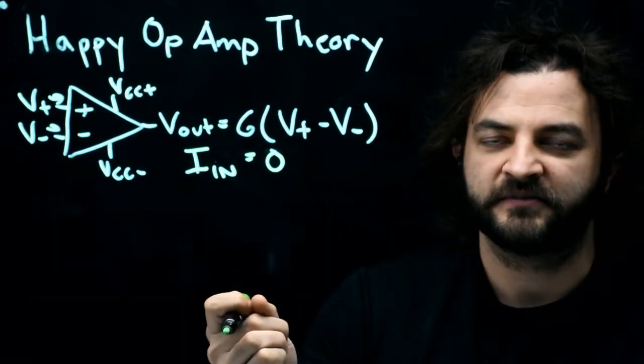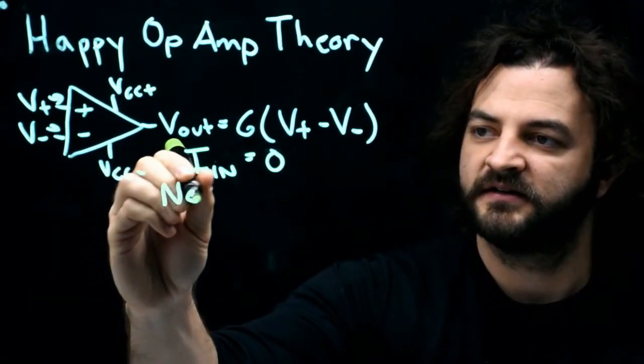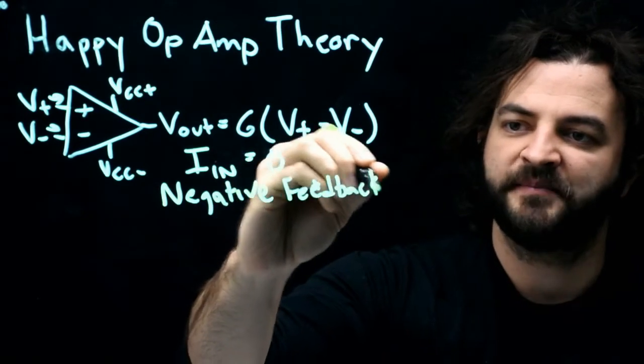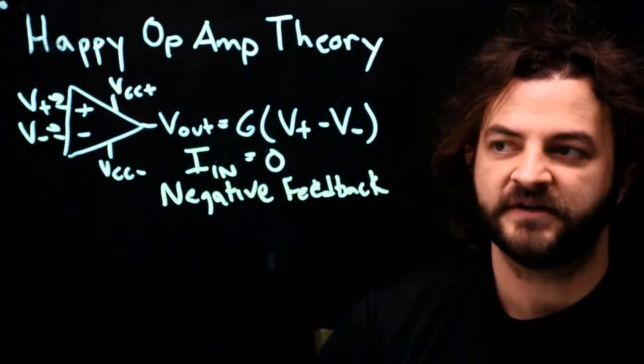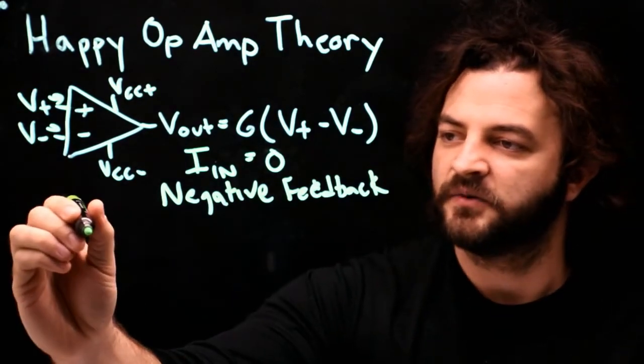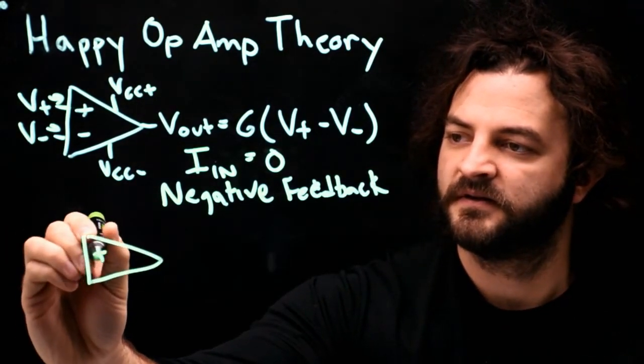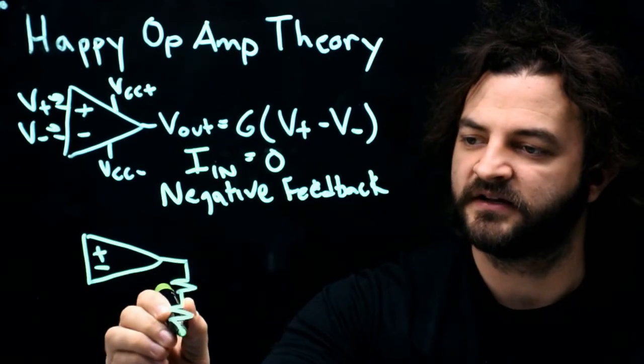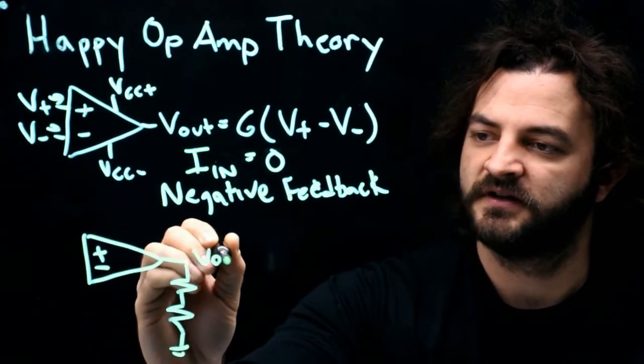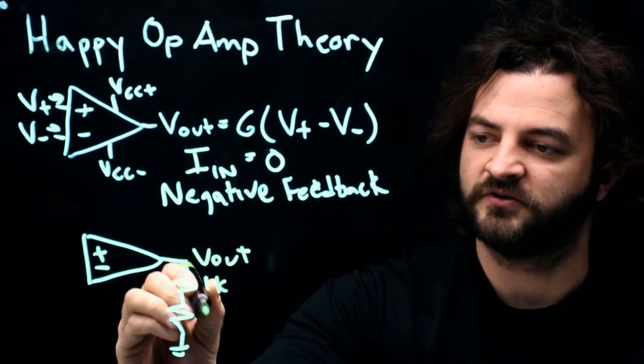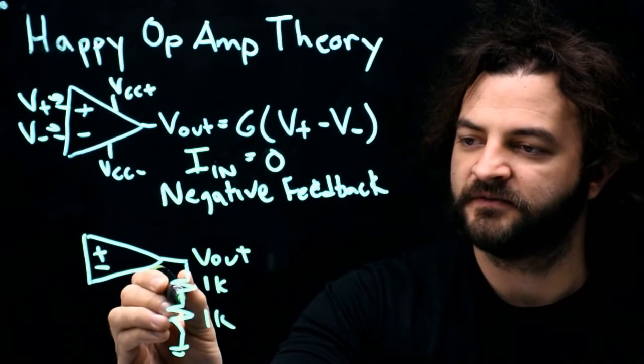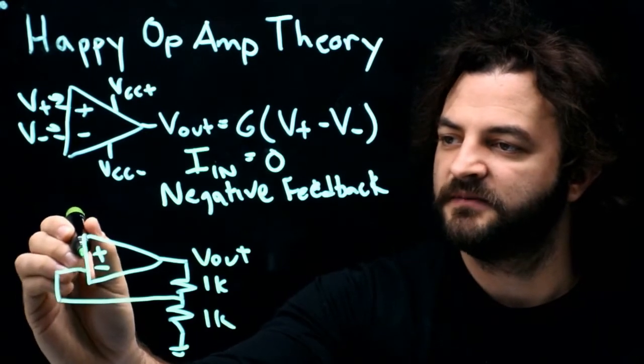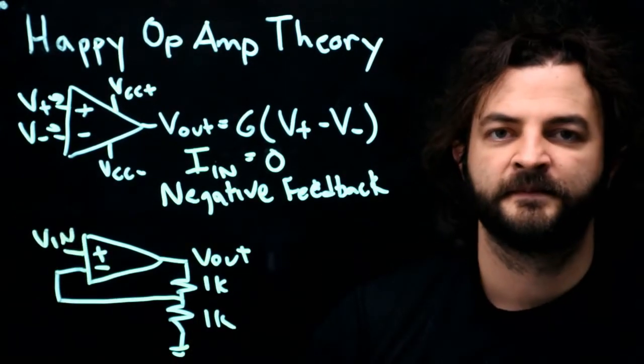Also knowing that, we're going to build an op-amp circuit with something called negative feedback. Happy op-amp theory is only true when we're in negative feedback. Let's do something with negative feedback. We'll have our op-amp, and negative feedback means that somehow the output can affect the inverting side of the op-amp. I'm going to take V out and go to a voltage divider of just arbitrarily two 1k resistors. And I'll take the output of the voltage divider and bring it back to the inverting input of the op-amp. And I'll take my input voltage and apply it to the non-inverting pin.